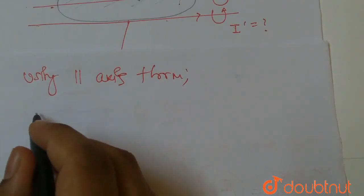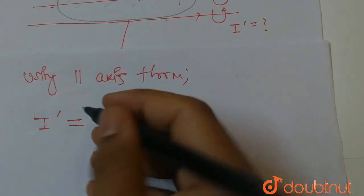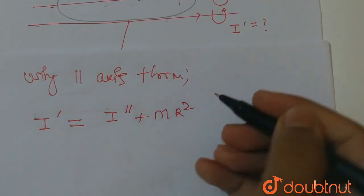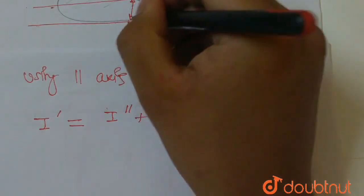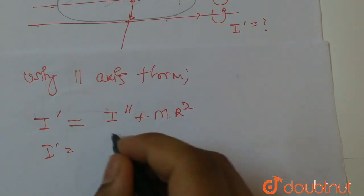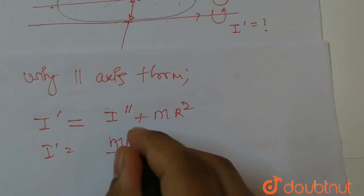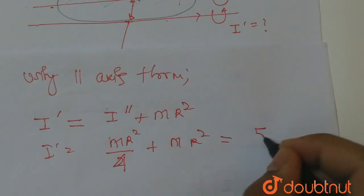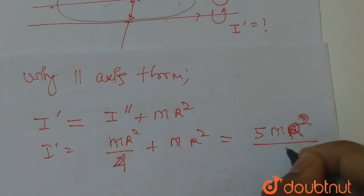Moment of inertia about this tangent equals I-double-dash plus MR². This is the distance from the center. So I-dash equals MR² by 4 plus MR², which gives us 5MR² divided by 4.